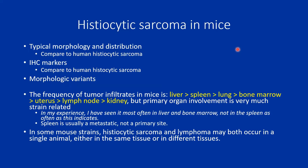Histiocytic sarcoma, as far as frequency in different organs, tends to be most common in the liver. According to the INHAND publication, it's liver, spleen, lung, bone marrow, and some other organs. What I'll be showing mostly are images of the liver. When it is in the spleen, it's usually metastatic and not primary, but it does vary strain to strain.